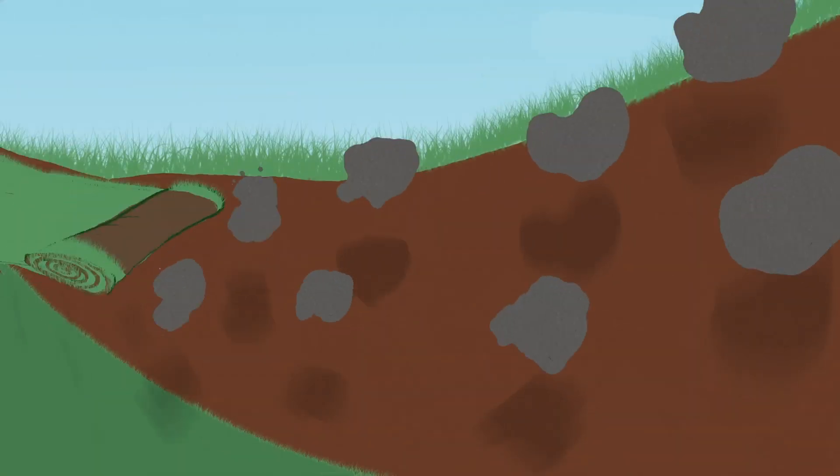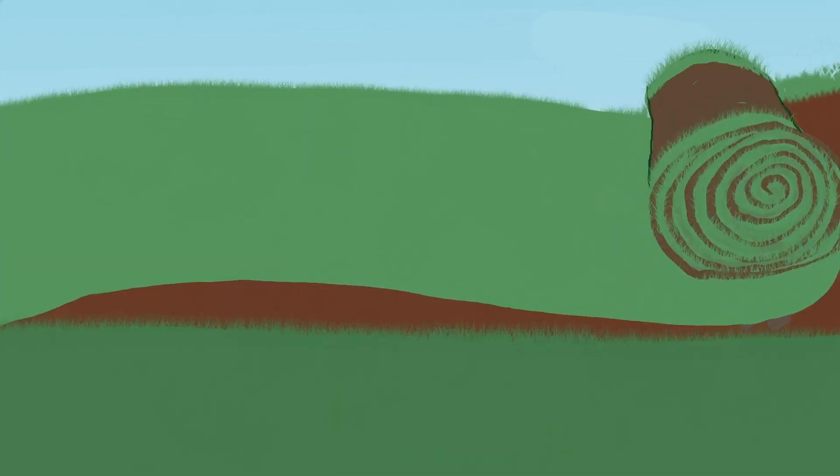If you're creating a new lawn, apply our Turf Improver directly to the soil first, at a rate of 1 kilo per square meter. Then plant your grass seeds or roll out your turf and water it in.